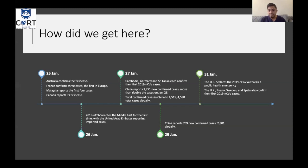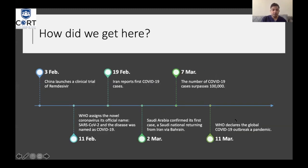On the 29th, China reported 760 new confirmed cases and 2,800 globally. On the 31st of January, the U.S. declared the 2019-nCoV outbreak a public health emergency. UK, Russia, Sweden, and Spain confirmed their first cases. On the 3rd of February, China launched a clinical trial of remdesivir, an antiviral agent. On the 11th of February, WHO assigned the novel coronavirus its official name: the virus was called SARS-CoV-2 and the disease was named COVID-19. On the 19th of February, Iran reported its first case. On the 2nd of March, Saudi Arabia confirmed its first case — a Saudi national returning from Iran via Bahrain. On the 7th of March, cases exceeded 100,000 worldwide. On the 11th of March, WHO declared the global COVID-19 outbreak a pandemic.